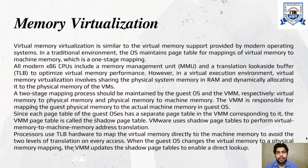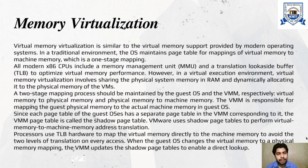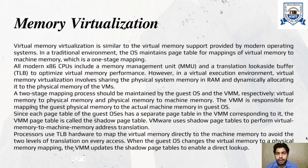Virtual memory virtualization is similar to virtual memory support provided by modern operating systems. In a traditional environment, the OS maintains a page table for mapping virtual memory to machine memory — a one-stage mapping. In a virtualized environment, a two-stage mapping is required. All modern x86 CPUs include a memory management unit (MMU) and a translation look-aside buffer (TLB) to optimize virtual memory performance. Virtual memory virtualization involves sharing physical system memory (RAM) and dynamically allocating it to the physical memory of VMs, with a two-stage mapping maintained by the guest OS and VMM respectively: virtual memory to physical memory, and physical memory to machine memory.